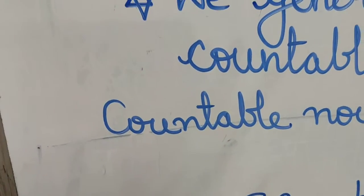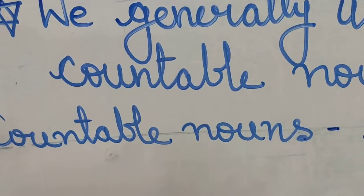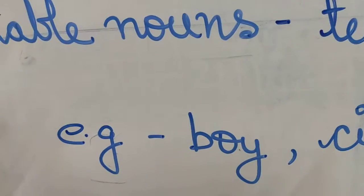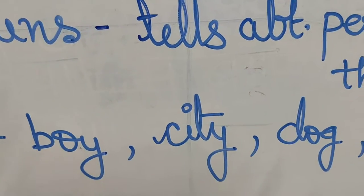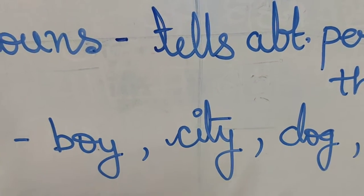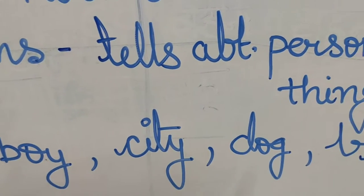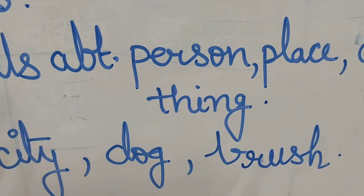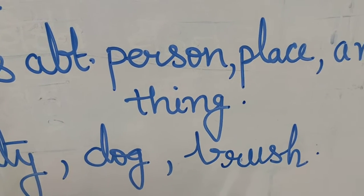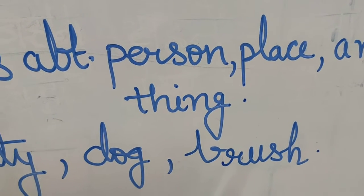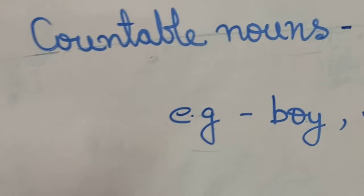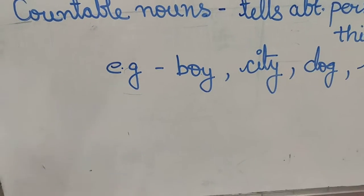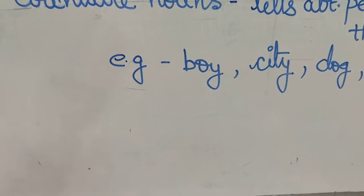Now I will show you that countable nouns can be singular and plural and here the examples which I have written: boy is a person, a common person, it is singular; city is a place name, it is also singular; dog is an animal name, it is also singular; and brush is a thing name, that is also singular. But these things can be changed into plural form also. Let's see how.